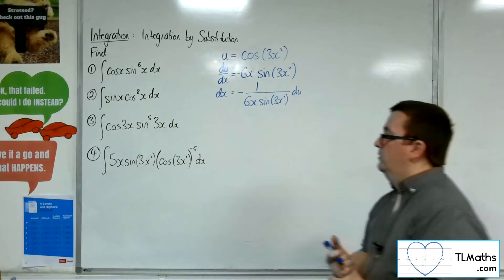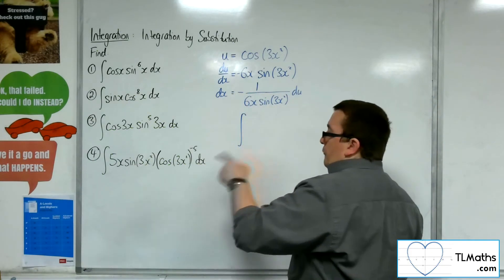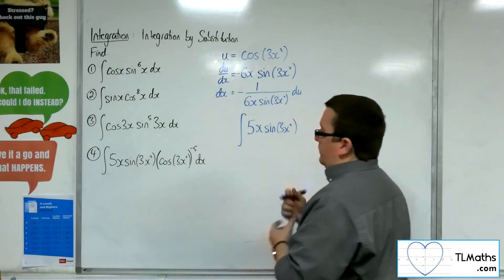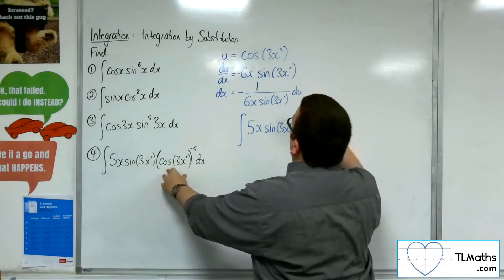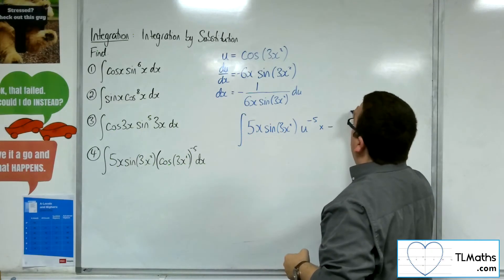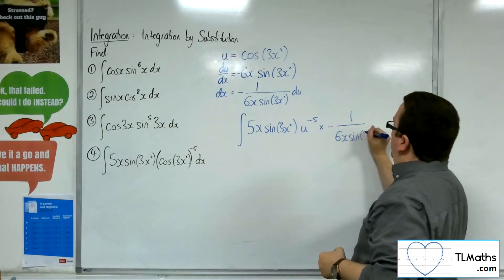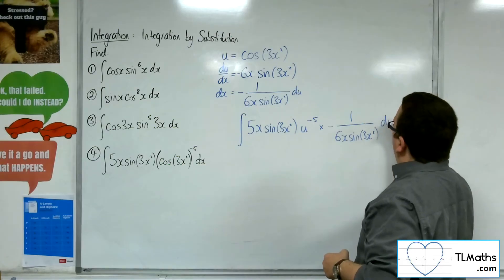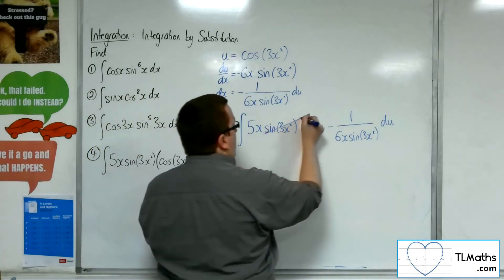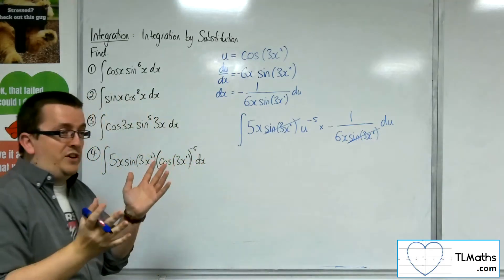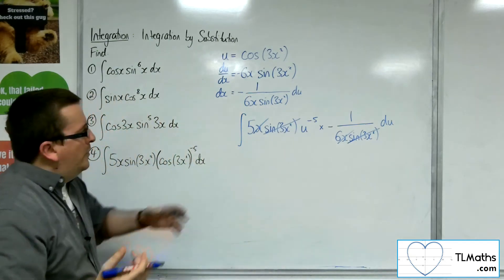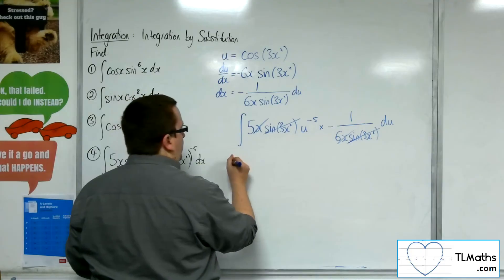So now I can go straight into the integral. We've got 5x, we've got sine 3x squared, and the cosine of 3x squared is u, so we've got u to the power of minus 5. The dx is replaced with minus 1 over 6x sine of 3x squared du. It doesn't look too pretty, but the sine of 3x squared cancels top and bottom, as in all the other examples. We can also cancel an x top and bottom. So we've got minus 5 over 6, which I can bring outside of the integral, leaving u to the minus 5 du inside.